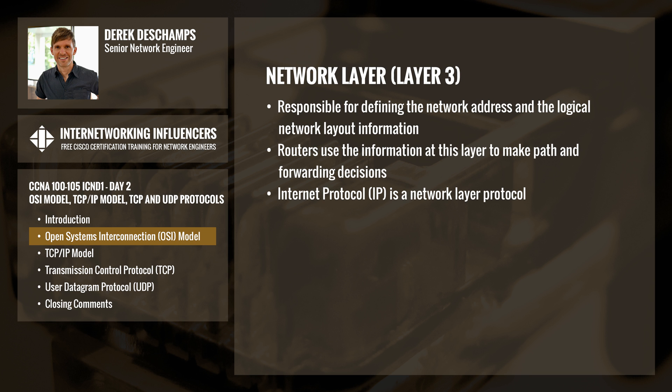The network layer, or layer 3, is responsible for defining the network address and the logical network layout information. Routers use the information at this layer to make path and forwarding decisions. Internet Protocol is found at this layer, where it uses IP address and subnet information to define network addresses.